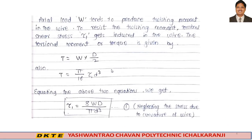Axial load W tends to produce a twisting moment in the wire. To resist the twisting moment, torsional shear stress tau1 gets induced in the wire. The torsional moment or torque is given by: capital T equals force W into D by 2. Also, capital T equals pi by 16 into tau1 into d cube — this is the general formula from design of shaft.